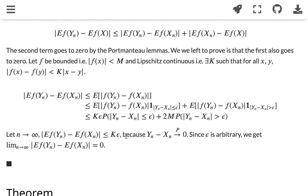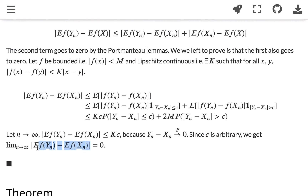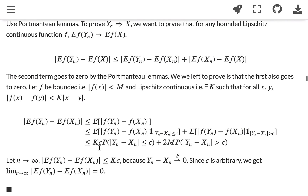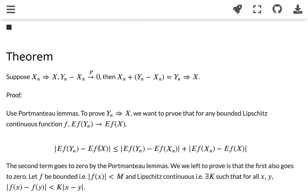If we let n go to infinity, since yn minus xn converges to zero in probability, the last term goes to zero. And since epsilon is arbitrary, we get the conclusion that E[f(yn)] converges to E[f(x)], and that proves the theorem.